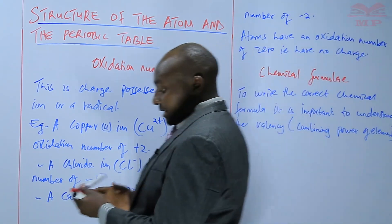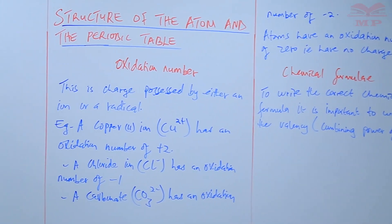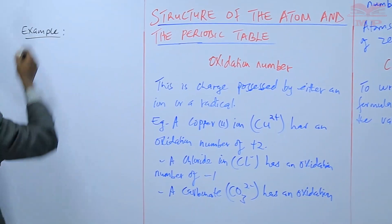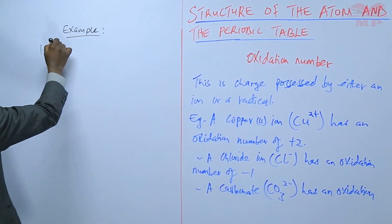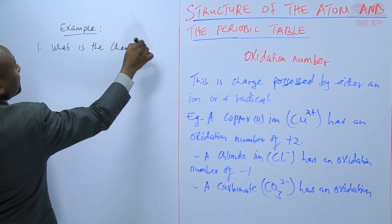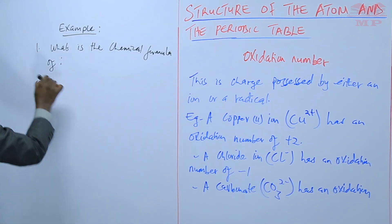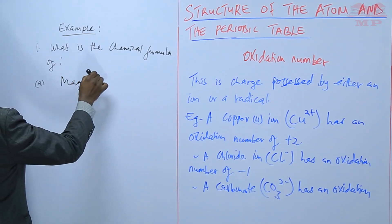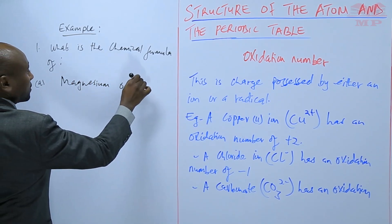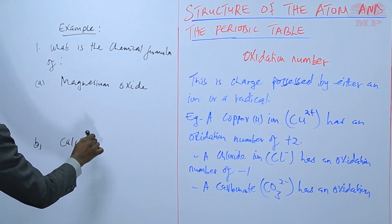And we'll take an example. We want to ask ourselves what is the chemical formula of a magnesium oxide, we'll leave a space for answering that, then b, calcium chloride.